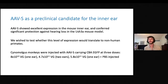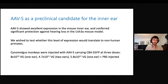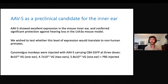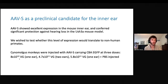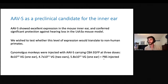The question became whether this would translate to non-human primates. We used cynomolgus macaques and tested a couple of different doses in a pilot study. One ear got a very low dose — 8 × 10^10 vector genomes — two ears got a higher dose of 4.7 × 10^11 vector genomes, and one other ear got a slightly higher dose again, along with a PBS-injected control ear.